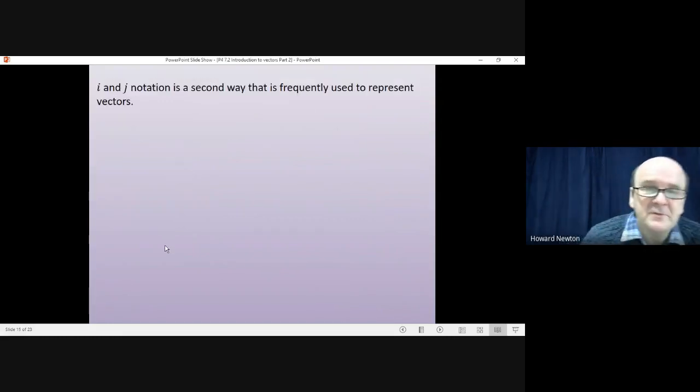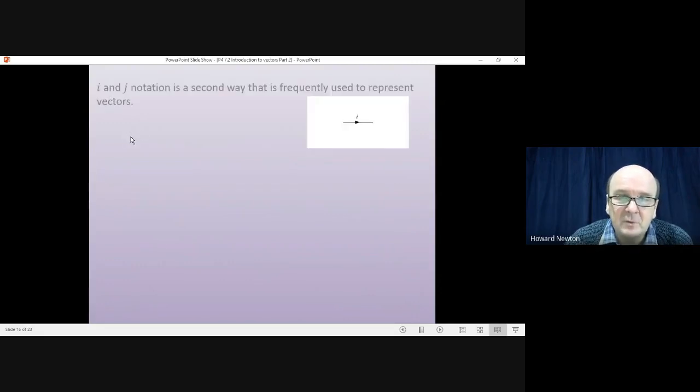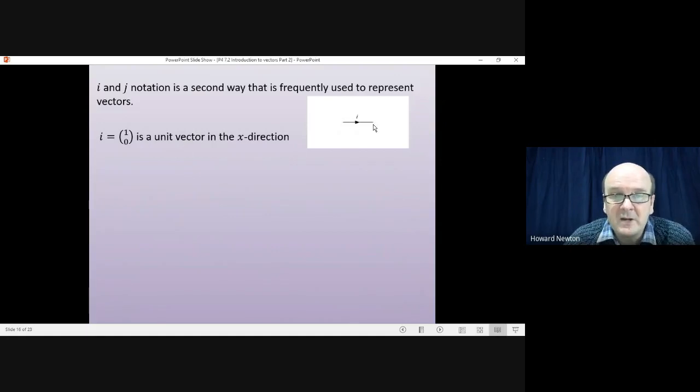Now there is a second form of notation used for vectors. It does mean exactly the same as a column vector. It's quite frequently used in physics and mechanics. A lot of people find it a little bit more confusing at first. It does mean the same thing, but it is just another way of writing vectors down. It's called i and j notation. i, first of all. i is a unit vector that goes in the x direction. So i is the vector 1, 0. It goes 1 in the x direction and 0. It doesn't go up or down. So it's a vector length 1 in the x direction.